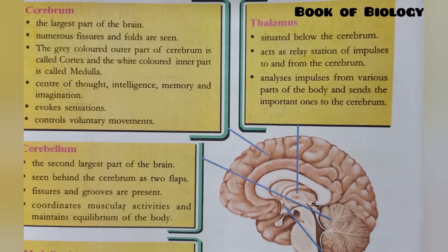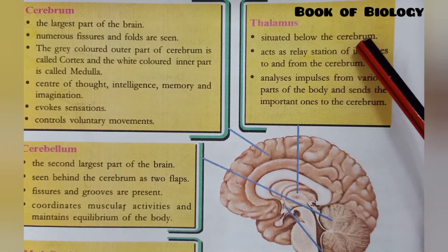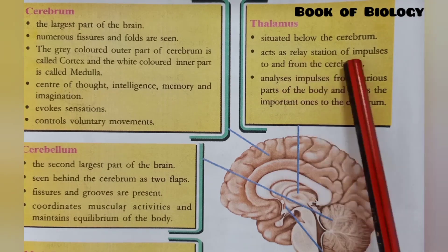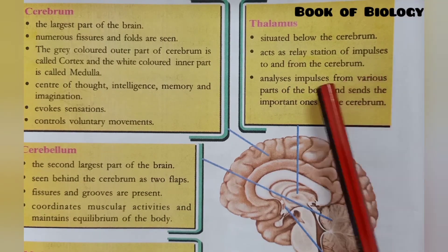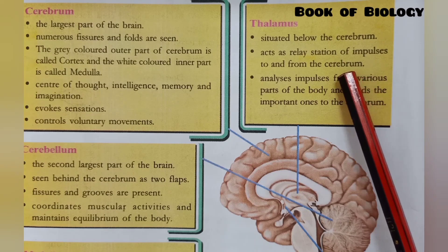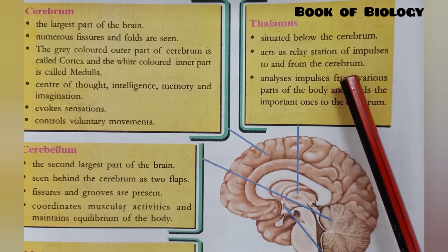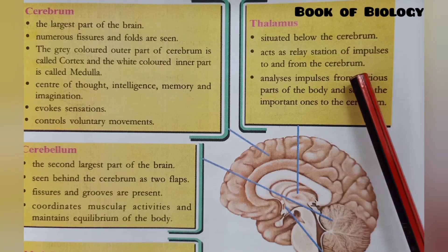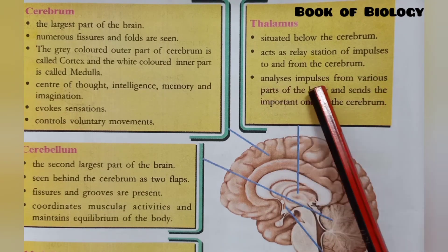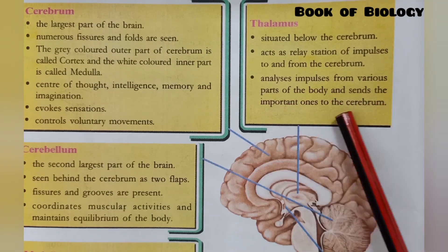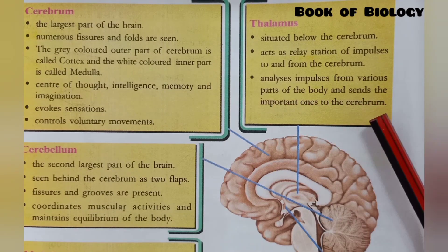The next part is the thalamus. The thalamus is situated just below the cerebrum. It acts as a relay station for impulses traveling to and from the cerebrum. It analyzes impulses from various parts of the body and sends the important ones to the cerebrum.